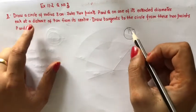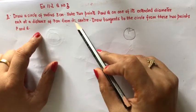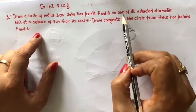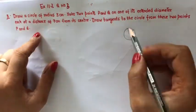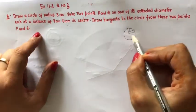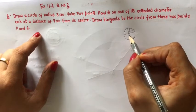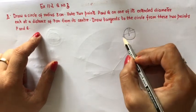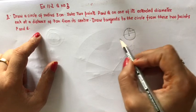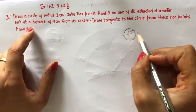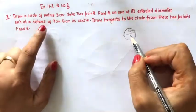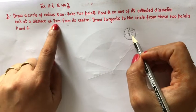Then what we need to do? We need to take 2 points P and Q on one of its extended diameter. So let us say this is 3 cm, this is 3 cm, right? If I mark it as O, you have to extend the diameter, extended diameter, and each point P and Q you have to take at a distance of 7 cm.